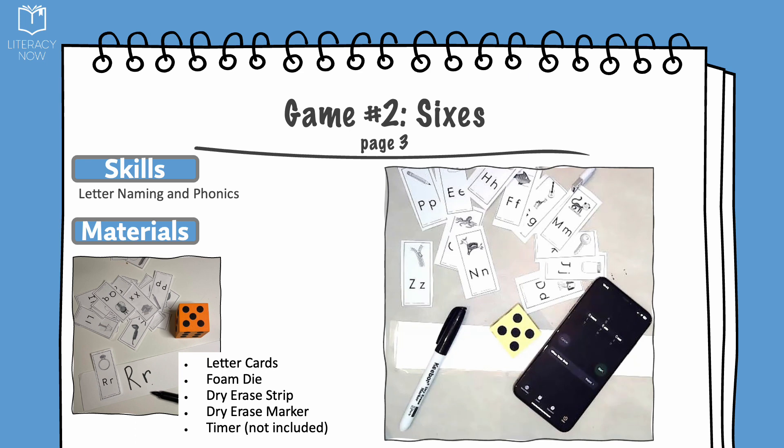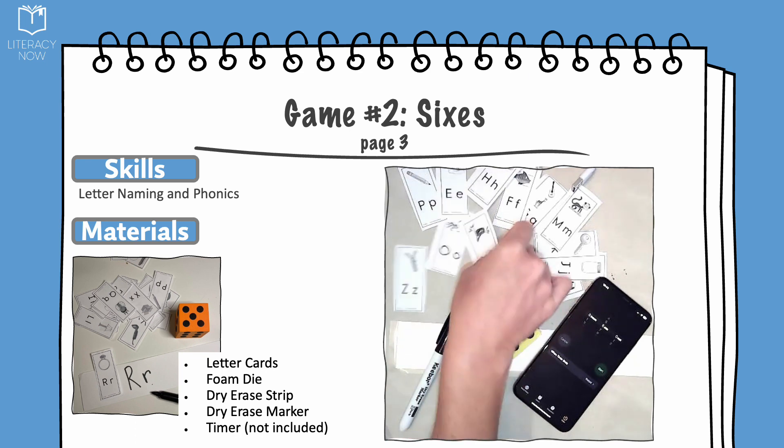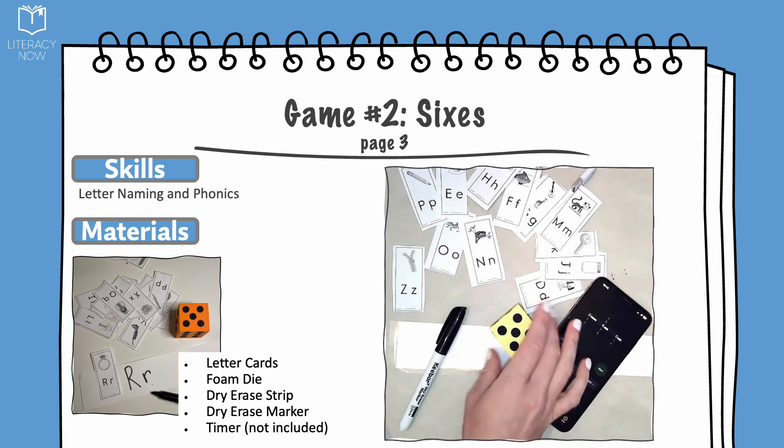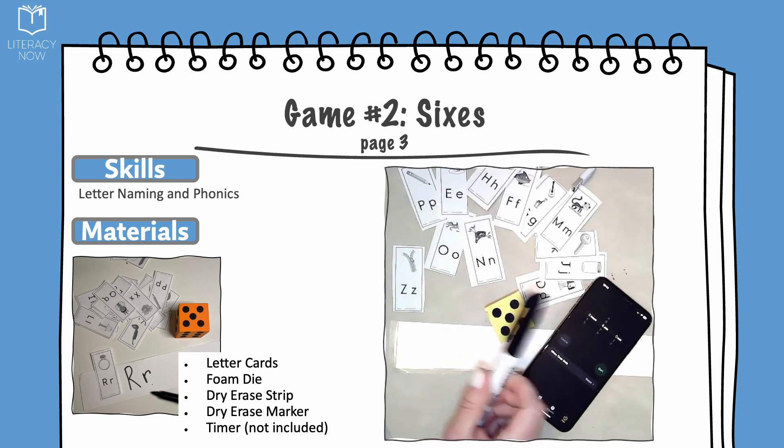They can be face up or they can be face down. You will also need the foam die provided, the dry erase strip, a dry erase marker, and tissue paper or towel or something to erase. Make sure it is a dry cloth.